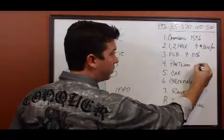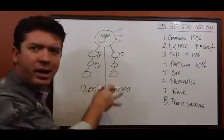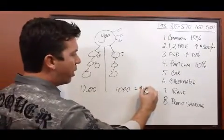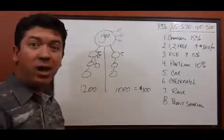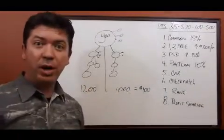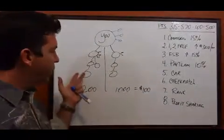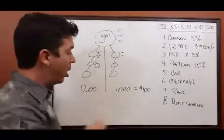Let's say we had around 1,200 points on our left and around 1,000 on our right. Our paid team bonus pays us 10% of the lesser team on a weekly basis. So in this scenario, we would have earned $100 for having 1,200 points on the left and 1,000 points on the right. Now everyone always asks, what happens to the other team's points?